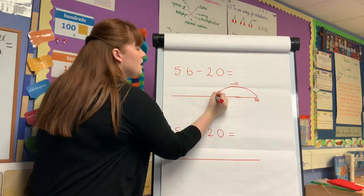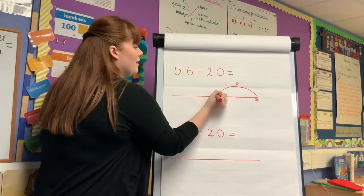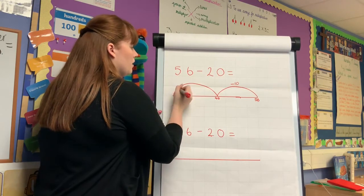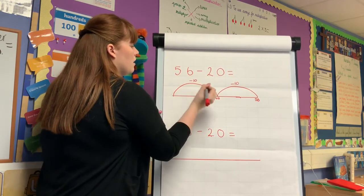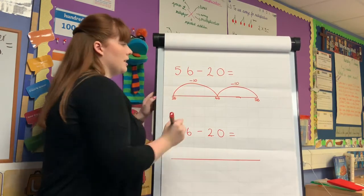Fifty-six subtract ten will give me forty-six. And again taking me down to thirty-six.